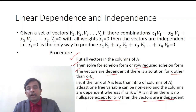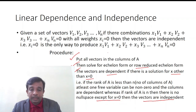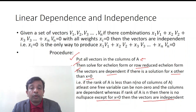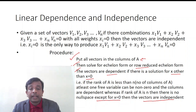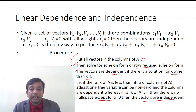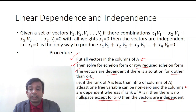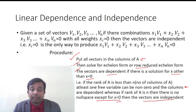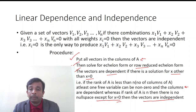The procedure to identify if a given set of vectors are independent or not: first, put all vectors in the columns of matrix A, then solve for echelon form or row reduced echelon form. The vectors are dependent if there is a solution for x other than x = 0, that is if rank(A) < n (number of columns), meaning at least one free variable can be non-zero. If rank(A) = n, then there is no null space except x = 0, and we call the vectors independent.